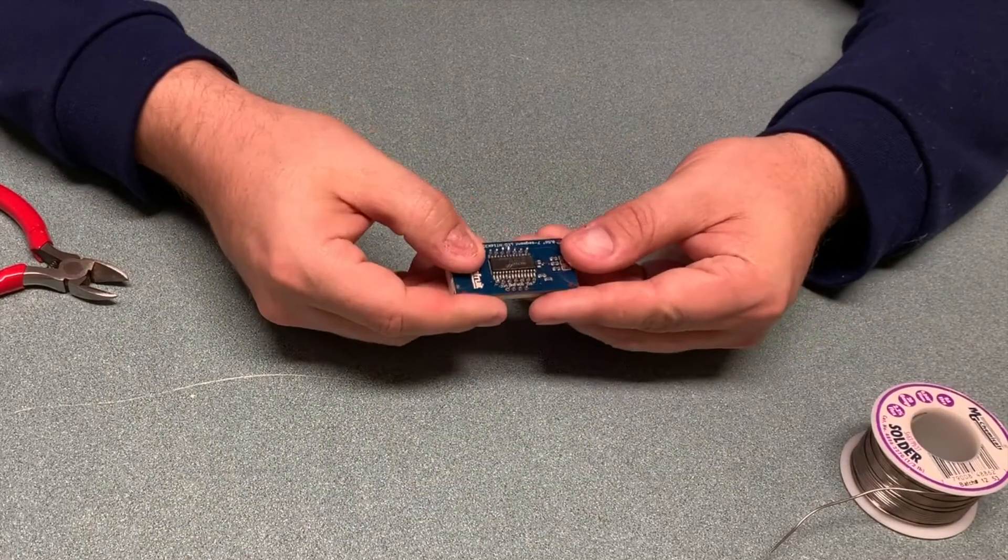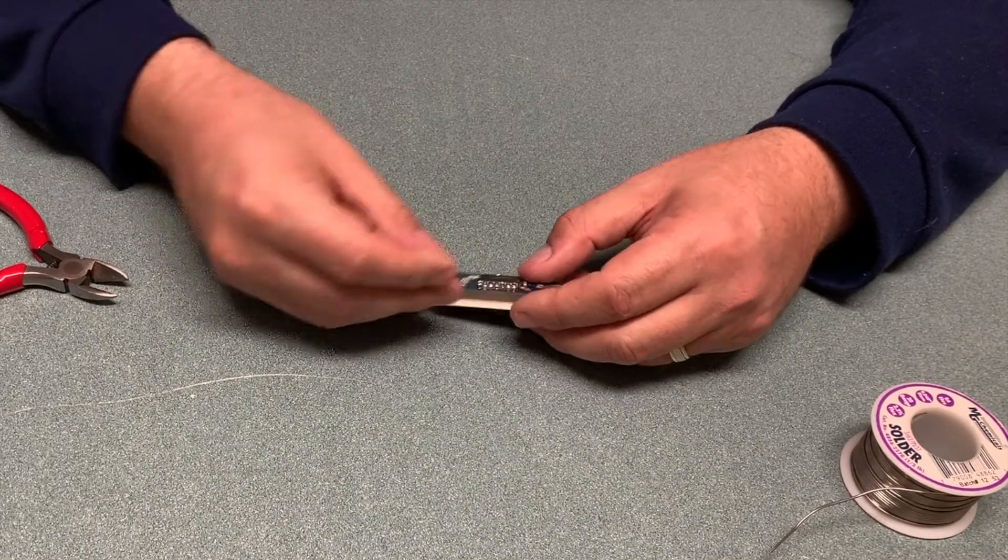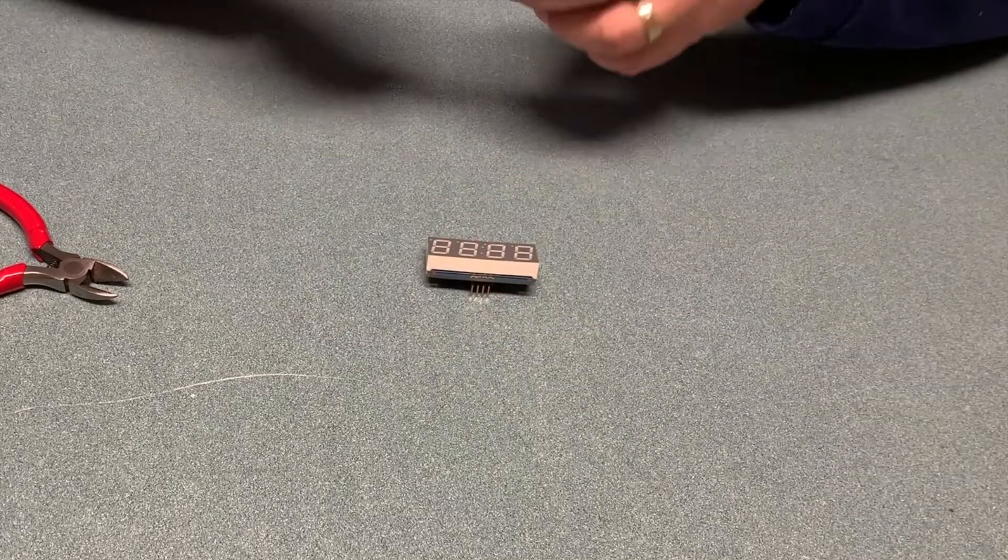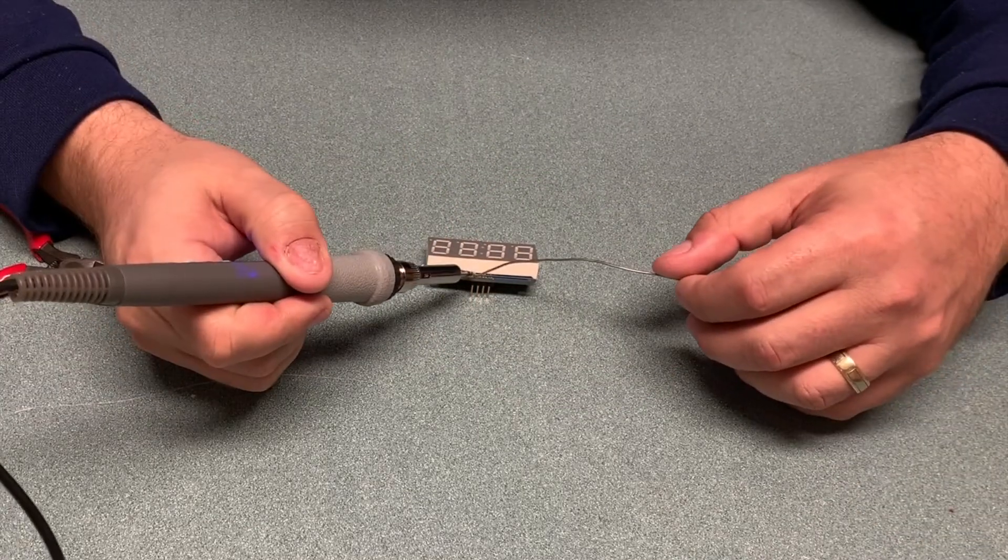Next I'm going to put the header pins in place. You could mount these either up or down. I'm going to put them down because if I put them in a project box down the road I'm going to want to have them facing away from the front of the display.